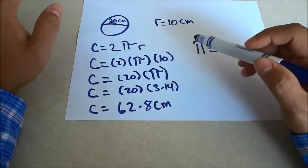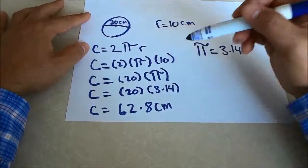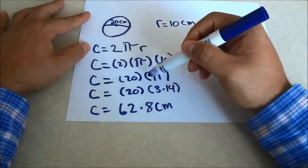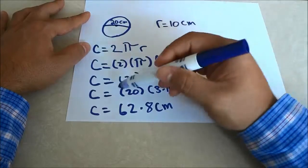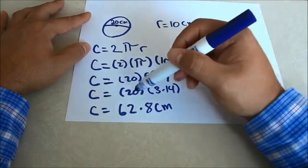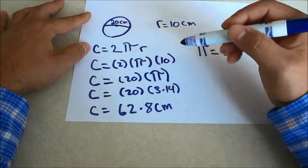Once again, this is a very close estimate because if I wanted the exact answer, I could plug 20 times π into the calculator. But I wanted to do it the old school way in my head by just multiplying 20 and 3.14.